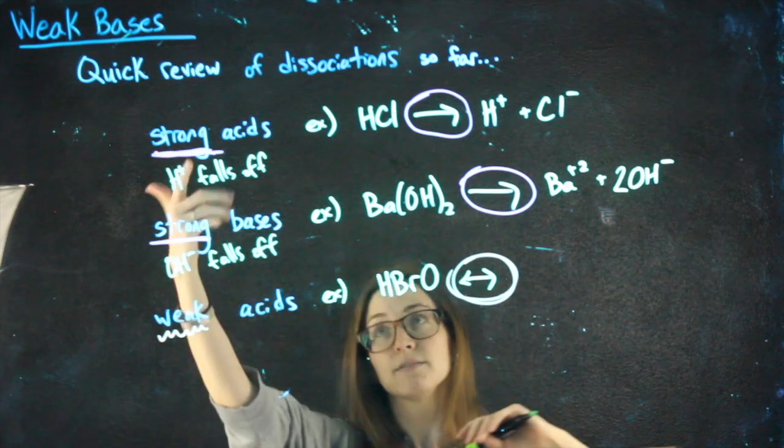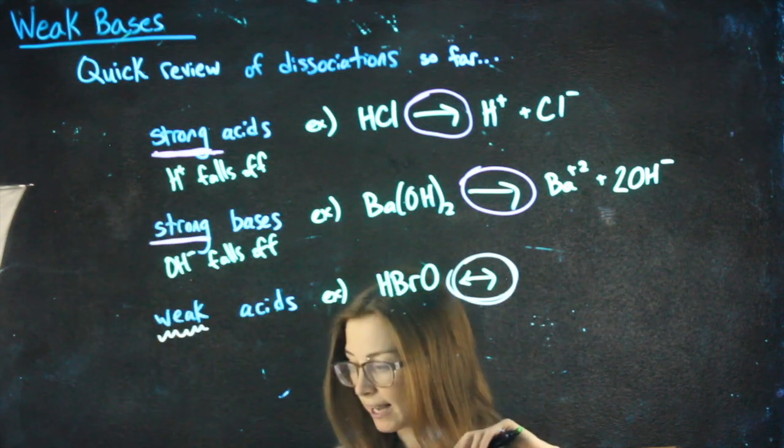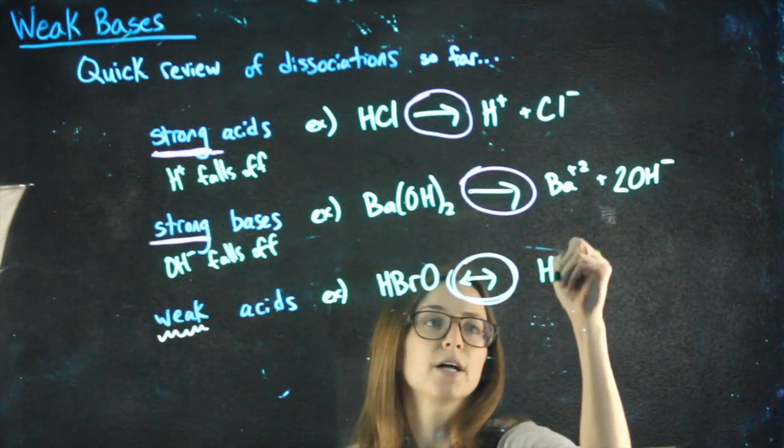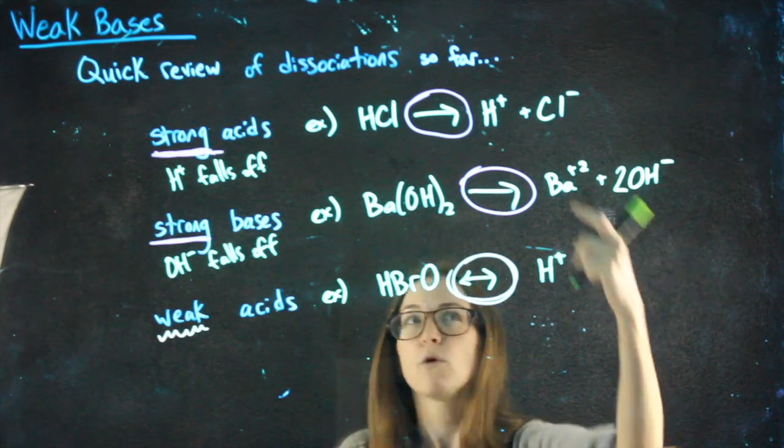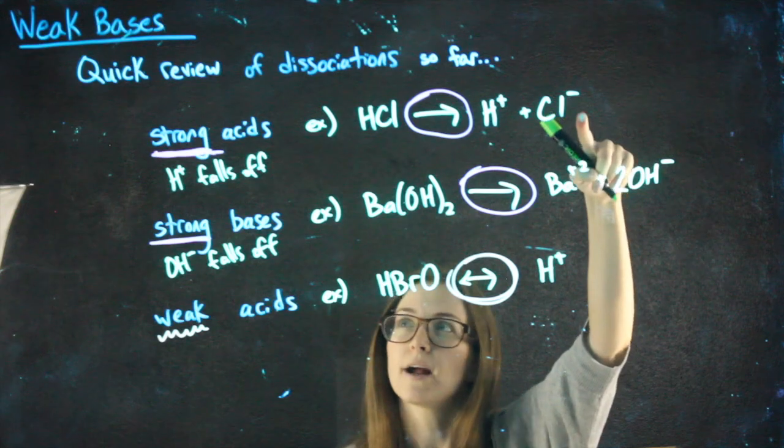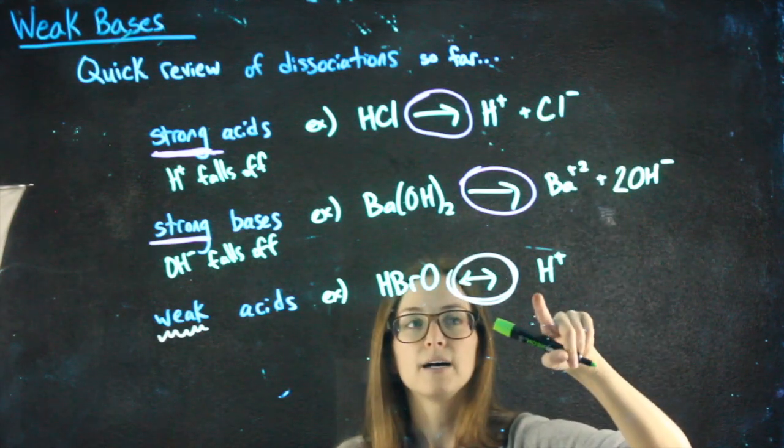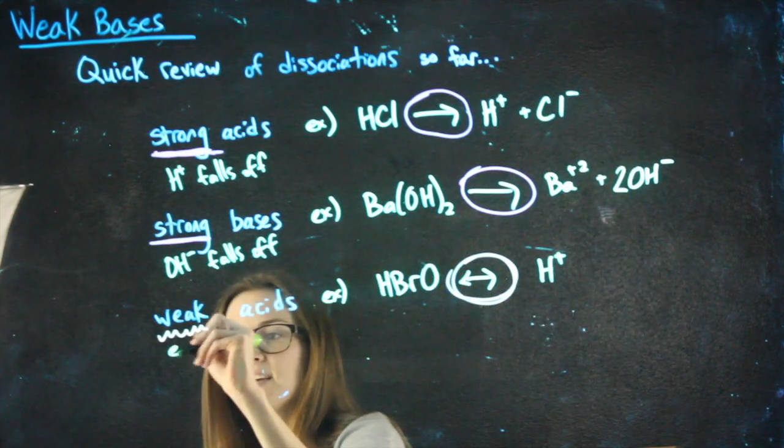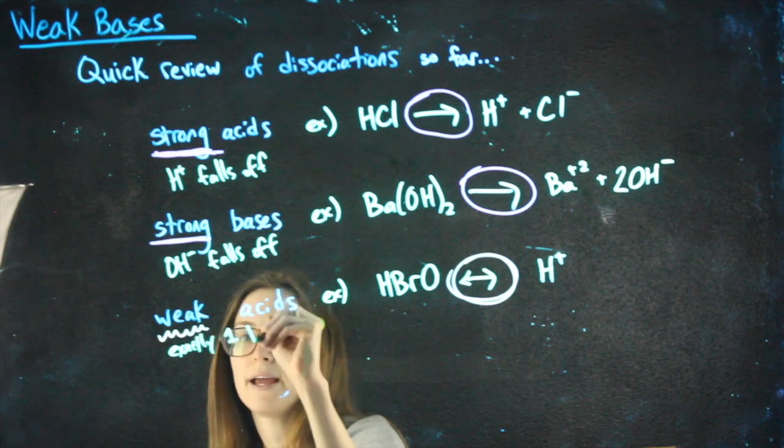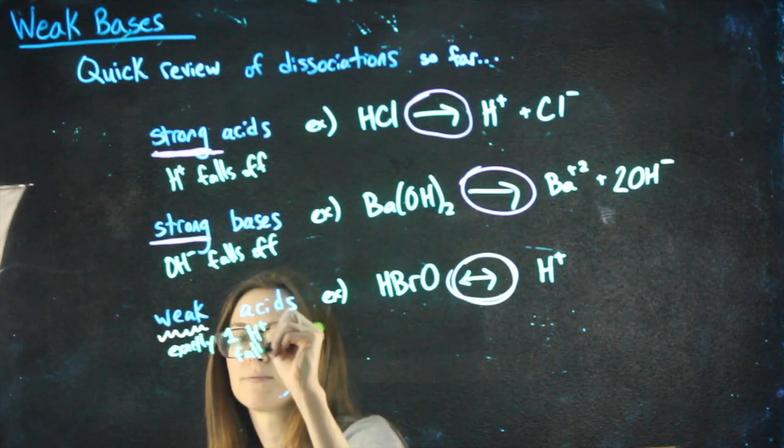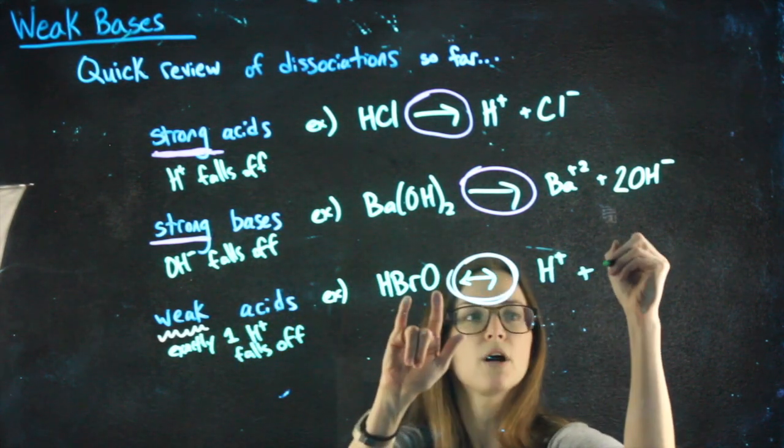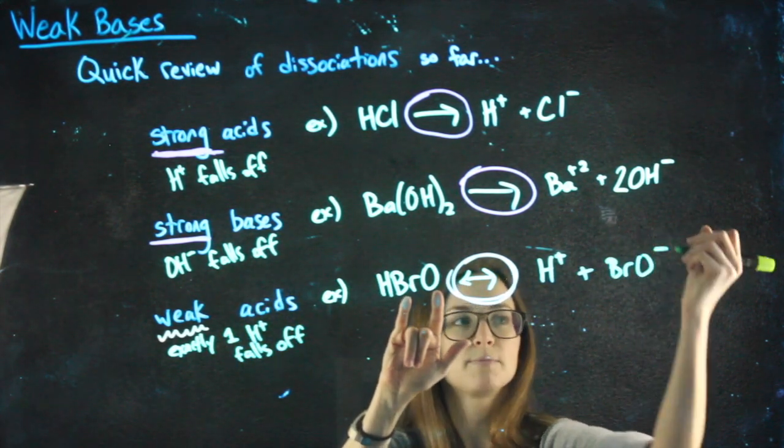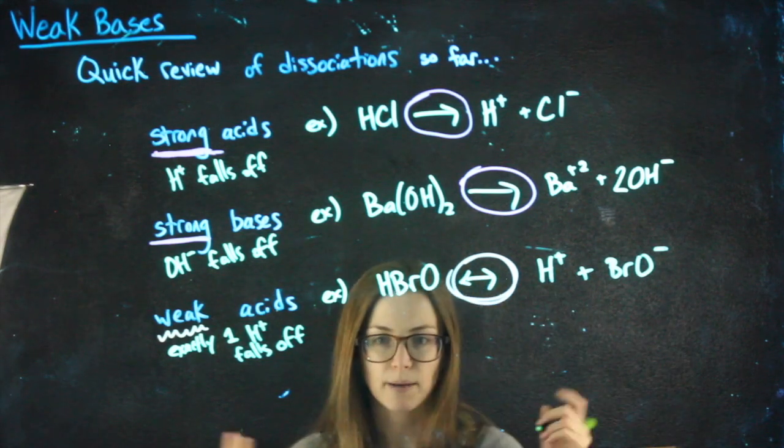And what happened is actually very similar to strong acids. An H plus falls off. But it's exactly one H plus. You won't really see any differences in strong acids that I can think of. But just to be safe, exactly one H plus falls off. And what does that leave us with? BrO minus, which must be a minus ion to balance out that plus.